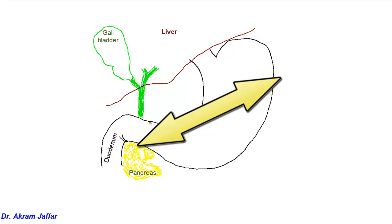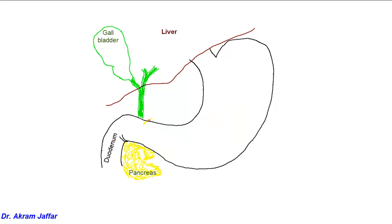So the part of the pancreas can be seen above here, against the posterior abdominal wall, behind the lesser omentum. This part of the pancreas is related across the lesser omentum with the visceral surface of the liver. The pancreas continues behind the stomach, and the tail of the pancreas will be related to the hilum of the kidney.